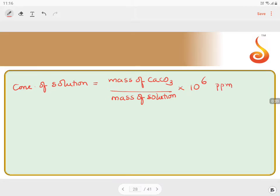Expressing this in parts per million, if I go with this data, they have given mass of CaCO3 is 10 grams. They have also mentioned mass of solution is 1000 grams. Times 10 to the power 6 parts per million.